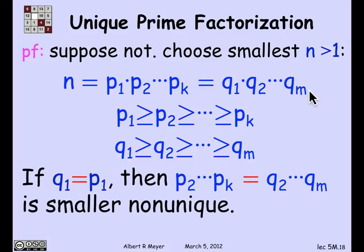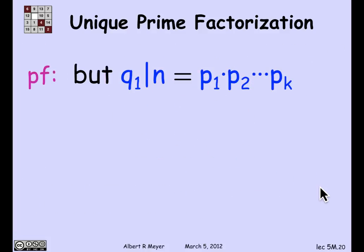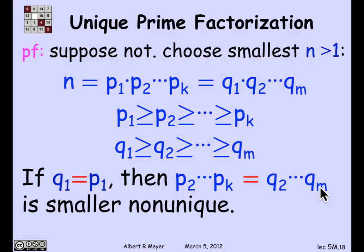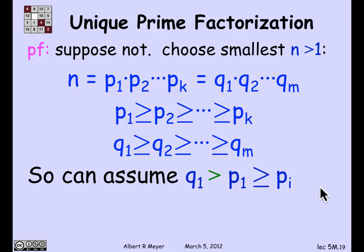First, suppose q₁ equals p₁. That's not really possible: if q₁ equals p₁, we could cancel p₁ from both sides and get that p₂ through pₖ equals q₂ through qₘ. These would still be different sequences, meaning we'd have a smaller number without a unique factorization, contradicting the minimality of n. So it's not possible for q₁ to equal p₁.